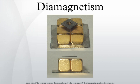Diamagnets may be levitated in stable equilibrium in a magnetic field, with no power consumption. Earnshaw's theorem seems to preclude the possibility of static magnetic levitation. However, Earnshaw's theorem only applies to objects with positive susceptibilities, such as ferromagnets and paramagnets. These are attracted to field maxima, which do not exist in free space. Diamagnets are attracted to field minima, and there can be a field minimum in free space.